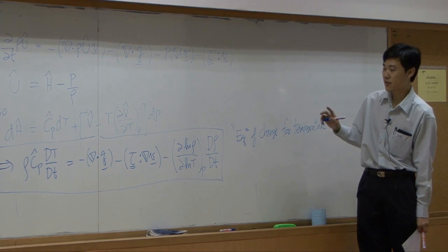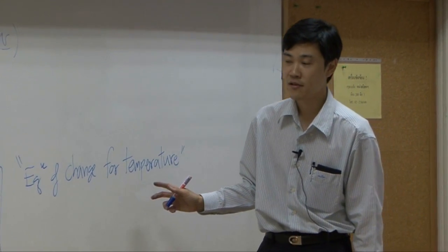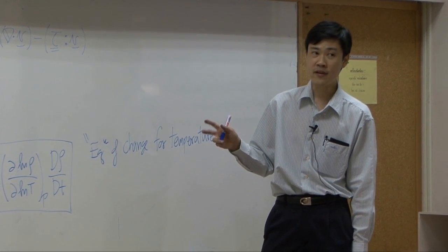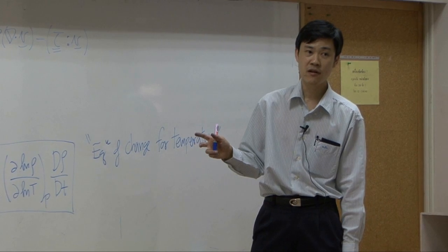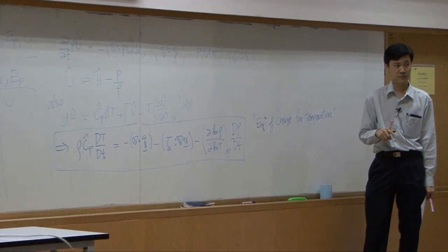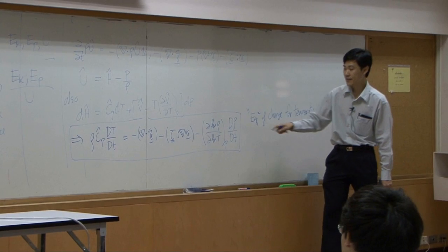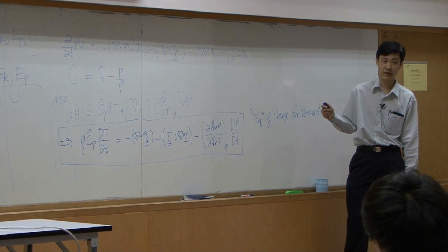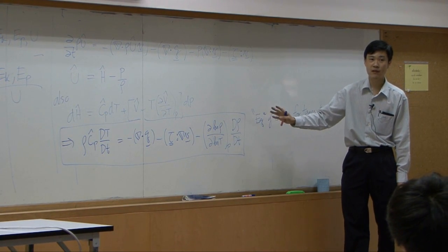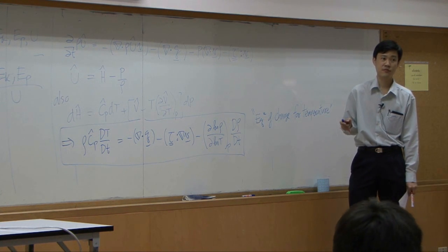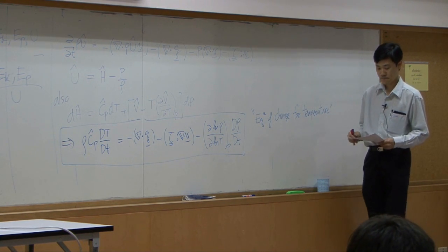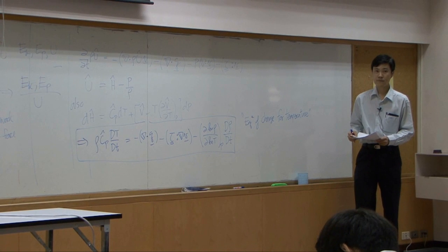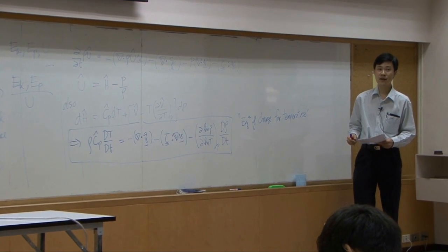The resulting equation is called the equation of change for temperature. It is written as a function of temperature, so it is usually used for systems where you have temperature change. The capital D over capital Dt here is the substantial derivative, which we have already discussed. This will be the equation we use to derive the temperature profile.